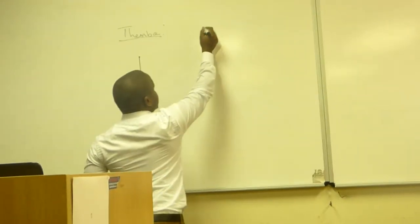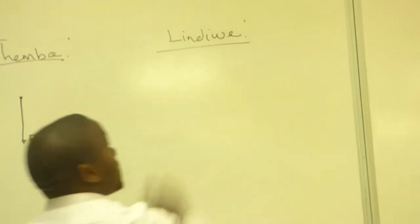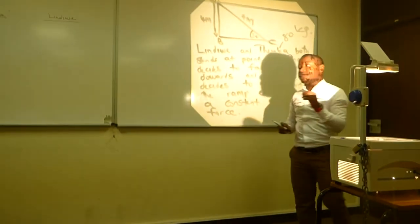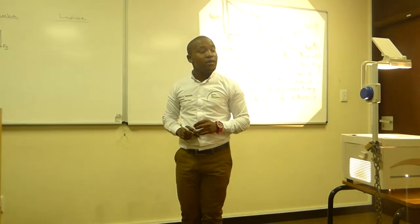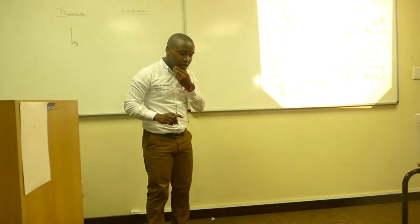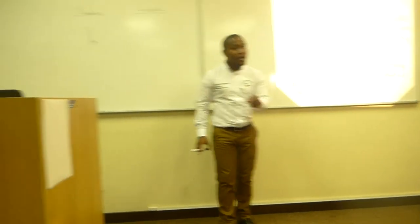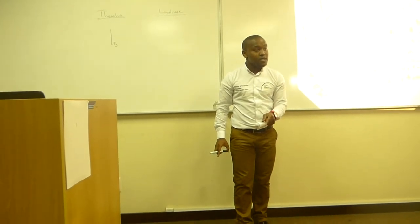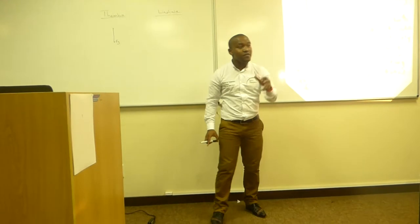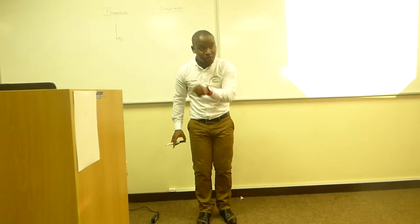Now let's go to Lin Duwe. Lin Duwe decides to roll down the ramp. We are told there is a constant frictional force acting on Lin Duwe. The force of gravity is responsible for the motion of Lin Duwe going down, because the force of gravity seeks to pull everything towards the center of the earth.